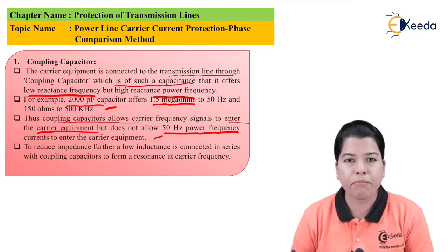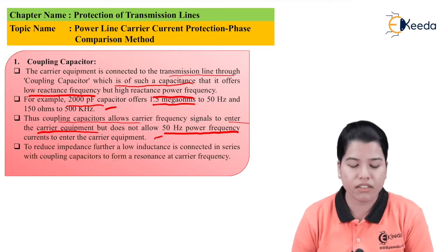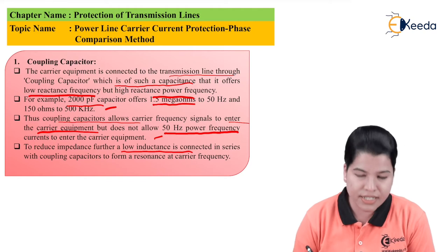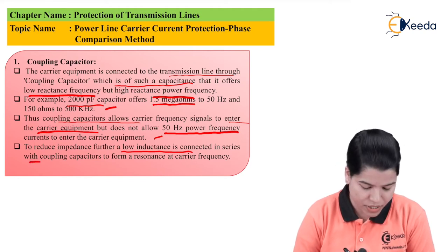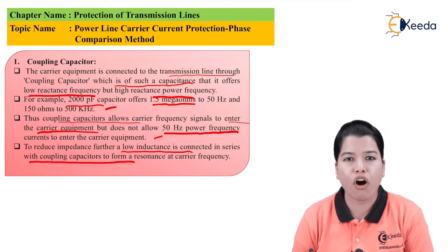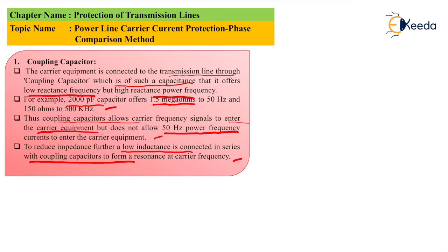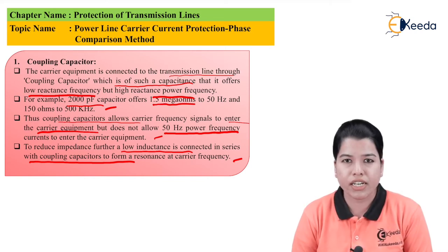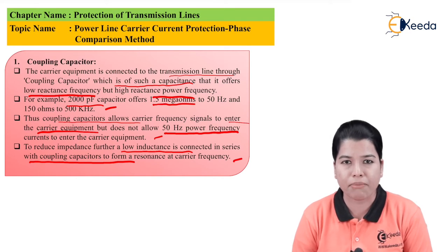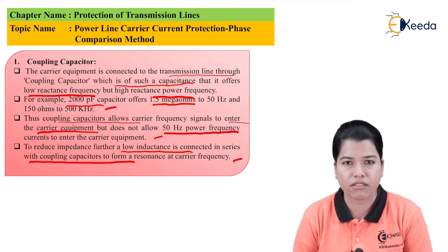In order to reduce the impedance further, a low inductance is connected in series with the coupling capacitor to form resonance at the carrier frequency. We have already seen in the figure that one inductance having a low value is connected in series with the capacitance. This is used to form the resonant frequency at both the capacitance and inductance.